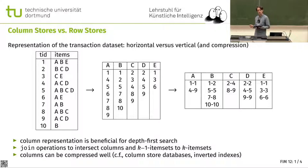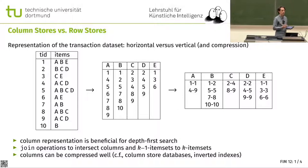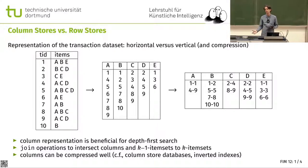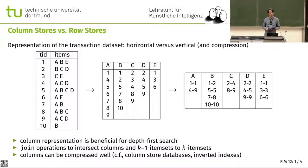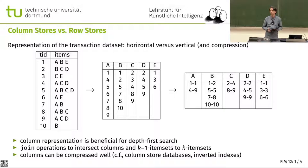It turns out that certain types of data processing are better done in columns — not everything. That's why I'm not a big fan of column store databases. They tend to shine if you have lots of attributes that you are not using, and then you can avoid loading them. And they tend to shine when you have data that can be compressed. It should compress quite well.